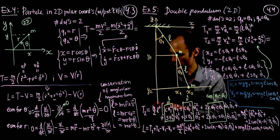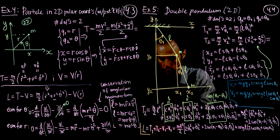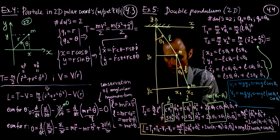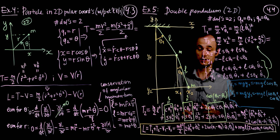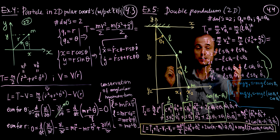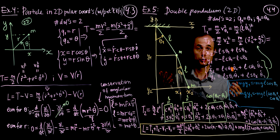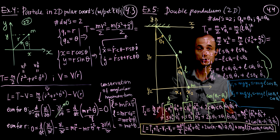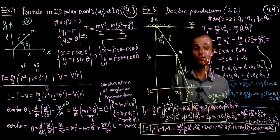We have gotten our expression for the Lagrangian. We will need this in the next lecture. Later in the course there will be an extra credit problem set where you can solve the ordinary differential equations for the double pendulum numerically and explore exciting aspects like the transition to chaos. That's it for Part 4 of Lecture 4; I'll see you in Part 5.